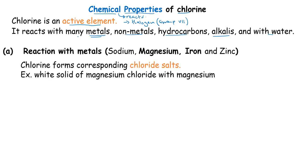So how does chlorine react with sodium, magnesium, iron, and zinc? Just like the name halogens, it means salt formers. These group 7 elements can easily form salt when they react with metals. And chlorine will always form corresponding chloride salts with given metals.